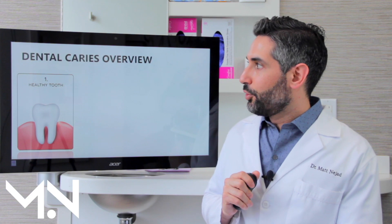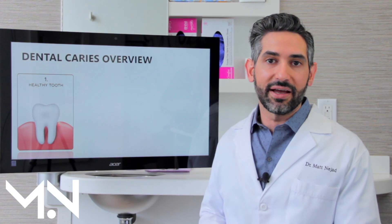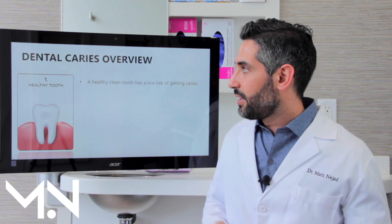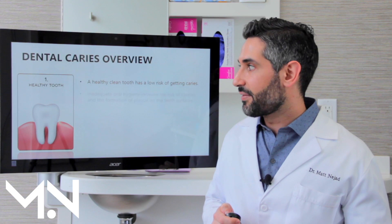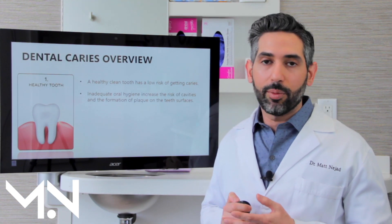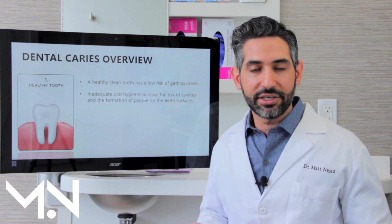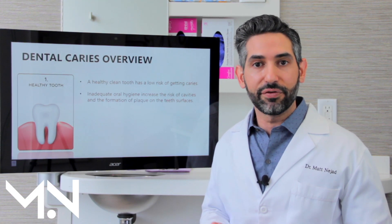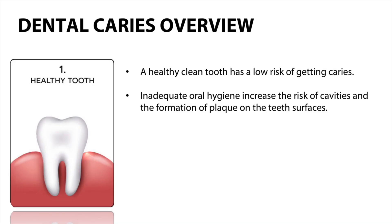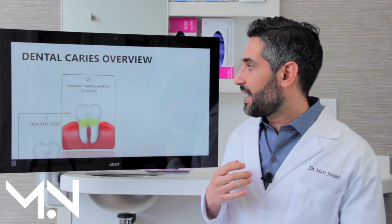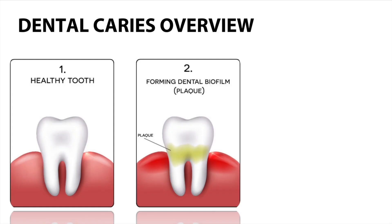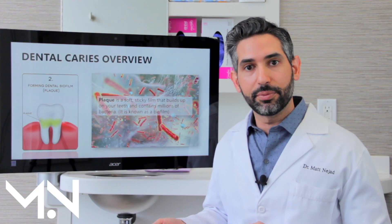Looking at the process of a cavity: you start with a healthy tooth, and a healthy clean tooth has a very low risk of having a cavity. But if you have inadequate oral hygiene and you're not removing all the food and plaque from your tooth, the cavity process starts to happen. As food stays behind, it turns into something called plaque — a sticky substance that adheres to the tooth.